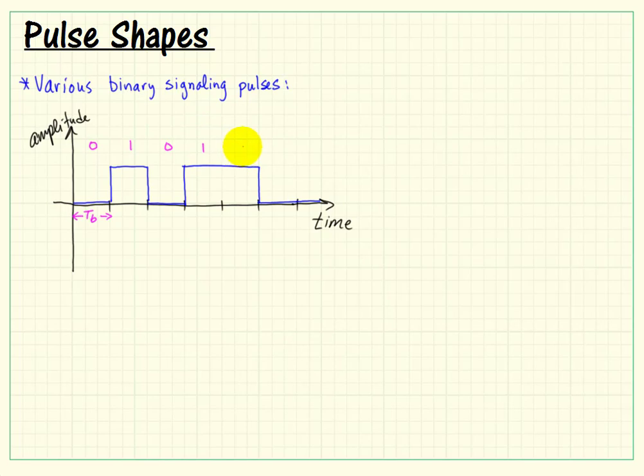Imagine that the message we're trying to transmit is 010110. This particular pulse shape is referred to as unipolar NRZ.